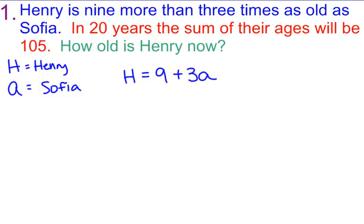In 20 years, the sum of their ages will be 105. So if I add Henry and Sophia's age together in 20 years, that'll be 105. Here's the trick. Many students will do this: Henry plus Sophia plus 20 years equals 105.